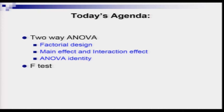Let us look at today's agenda. In today's lecture we are going to briefly describe factorial design, a very important statistical tool in fields such as psychology, agricultural science, education research, and medical sciences. We will study the difference between main effect and interaction effect, revisit the ANOVA identity for two-way ANOVA, and show how to conduct an F-test.